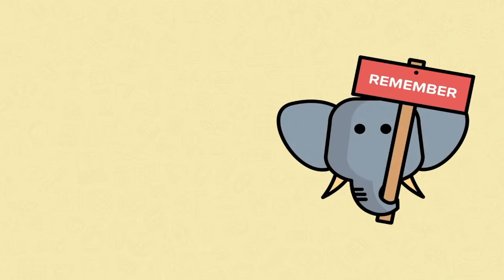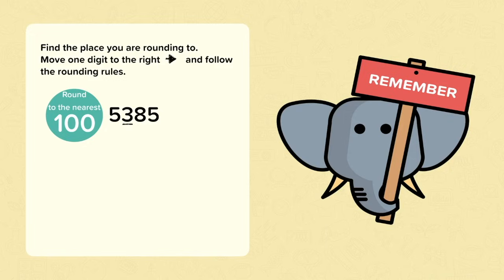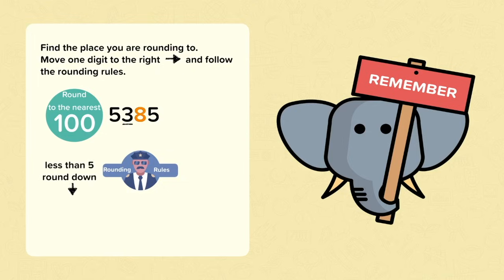So remember, when you're rounding, the first thing that you need to do is find the place you are rounding to. In the example here, we're rounding to the nearest hundred. We find the hundreds digit, which is three, and then we move one digit to the right and follow the rounding rules. If the digit is less than five, we round down. If the digit is five or more, we round up. As eight is more than five, we round up to 5400.